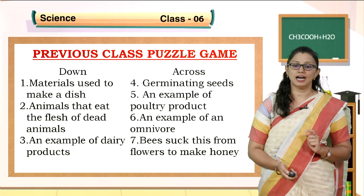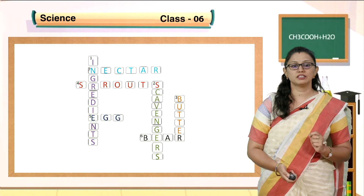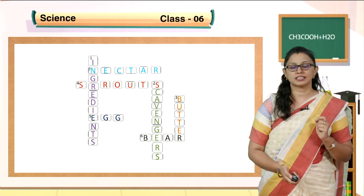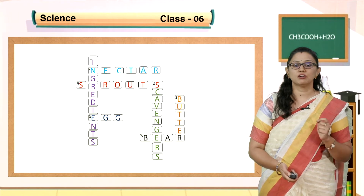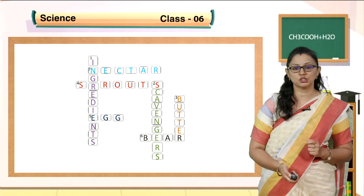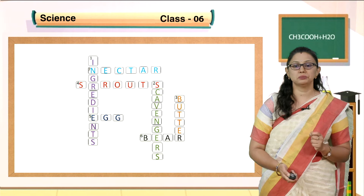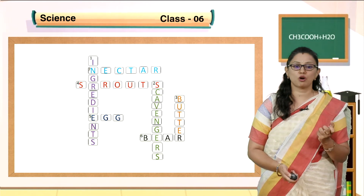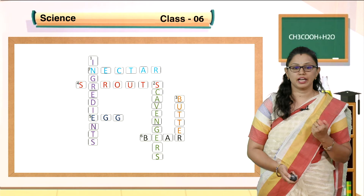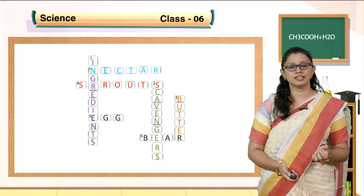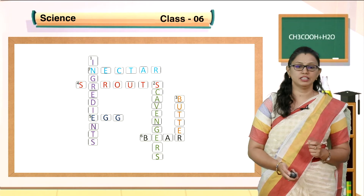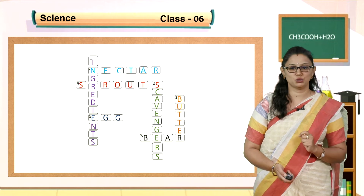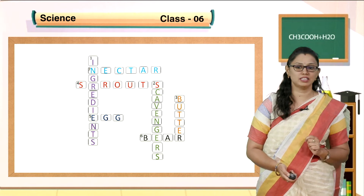Let us read the answers. The first one is ingredients. The second one, the answer is scavengers. Third one, butter. The fourth one, sprouts. Fifth one, egg. Six, nectar. And seven is nectar. I hope children you have enjoyed all these puzzles.